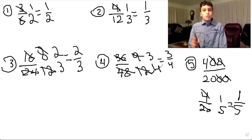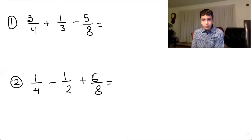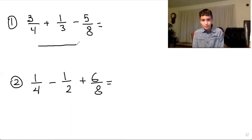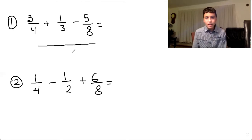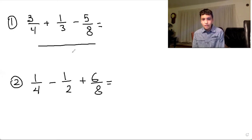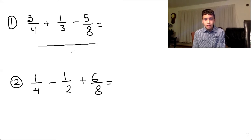And now I'm going to be showing you how to add three fractions. For the first question, we put a long line and then we have to find our lowest common denominator. So we look at the biggest number, which is eight, but three can't go into eight. So we move on to the next multiple of eight, which is 16. And still three can't go into 16. So we look at the next multiple, which is 24. And yes, 24 is our common denominator.